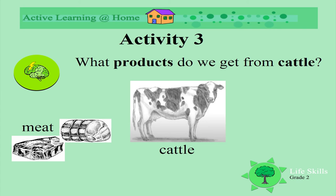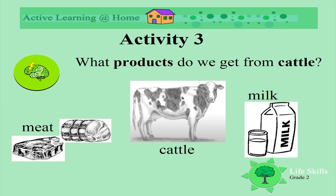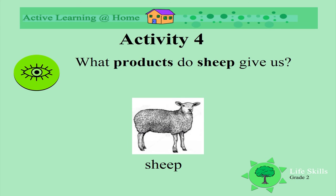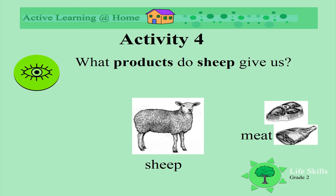We get meat and milk from cattle. Do you like to eat beef? Do you like to eat meat? How do you like it to be cooked? Do you drink milk? How much milk do you drink in a day? What products do sheep give us? You get meat from sheep, and we get wool.